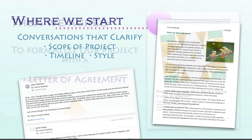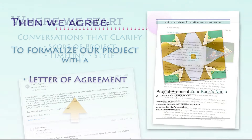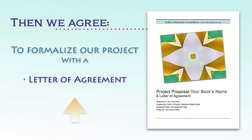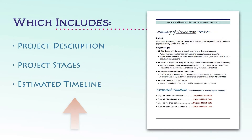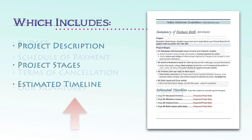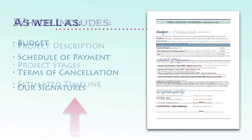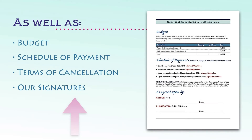If we agree to move ahead, I'll compose a letter of agreement for your project. The letter of agreement includes a project description, project stages, and an estimated timeline. It also includes the budget, schedule of payment, terms of cancellation, and our signatures. Other details will be included as agreed upon.